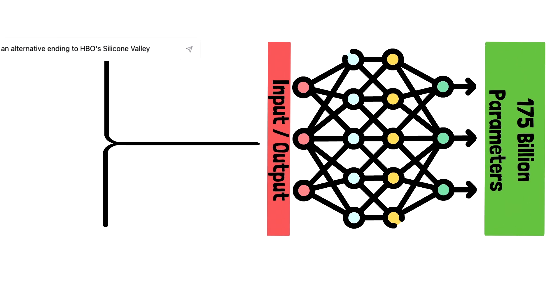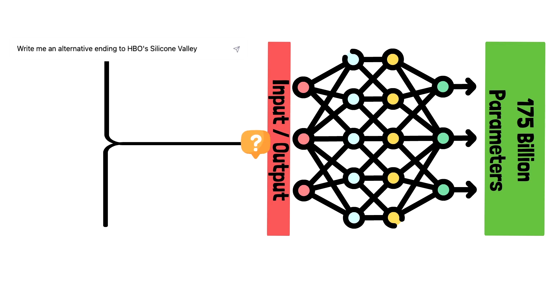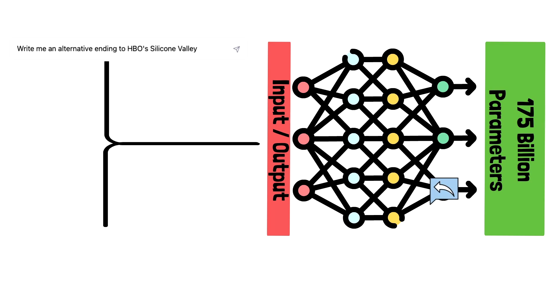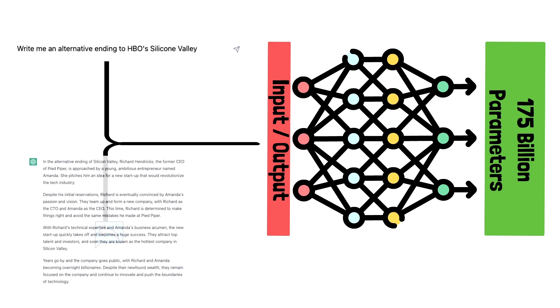This means when a request comes in, NLP processes the input and runs it through a neural network of artificial atoms that work just like the human brain to process the answer and present it back to the user in real time.